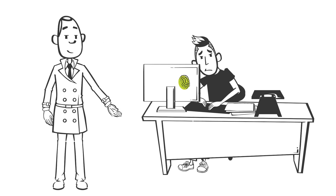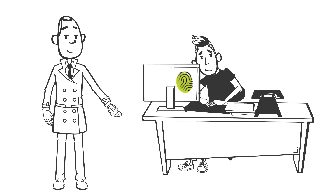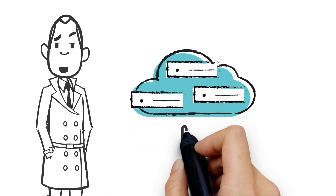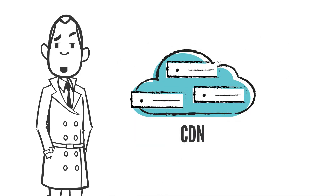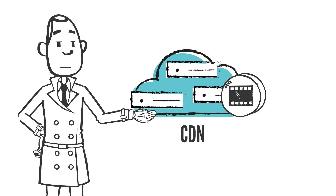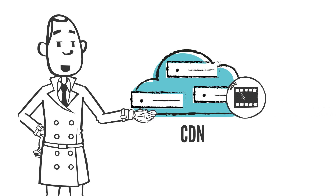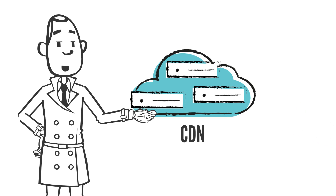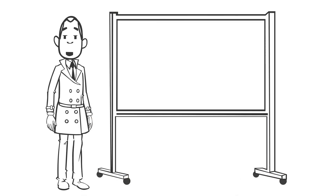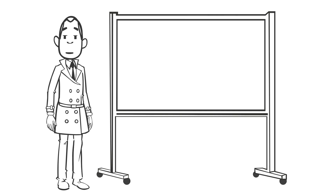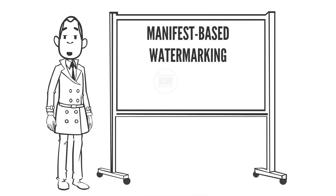We scale TV delivery using CDNs, which stream copies of popular shows from distributed servers that are closer to the viewers. Sending the same copy to many viewers is a problem if we want to include a unique watermark. There are two ways we can solve this problem.